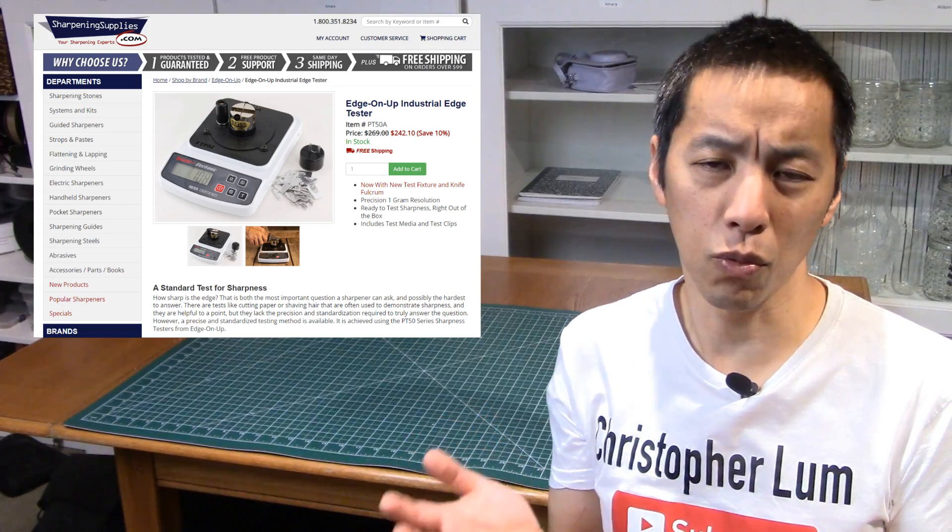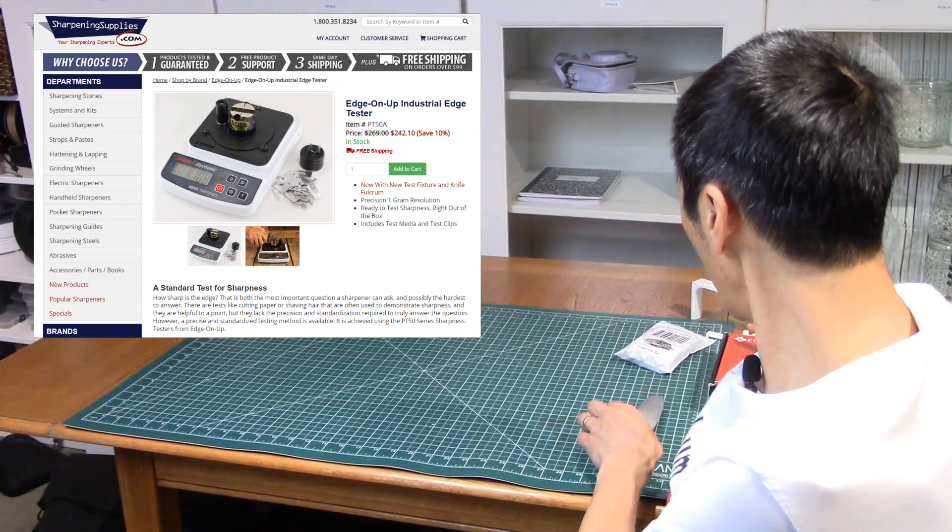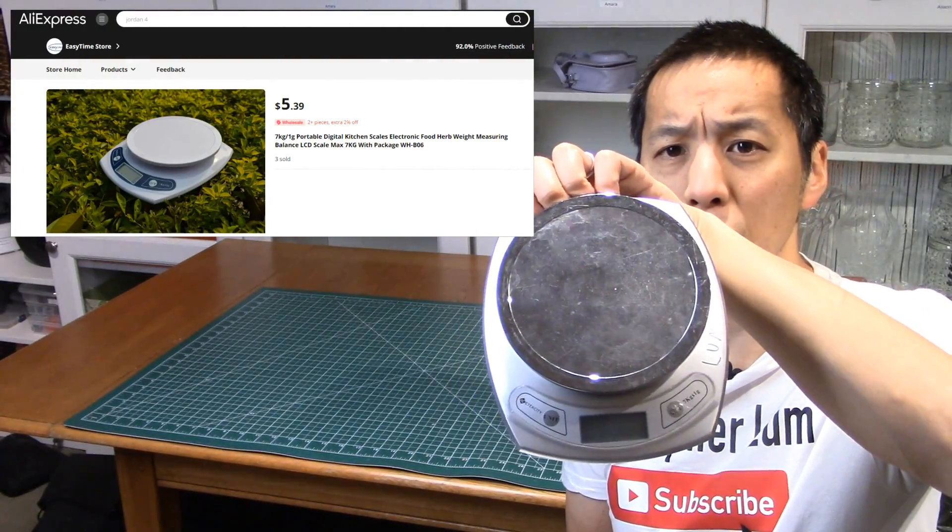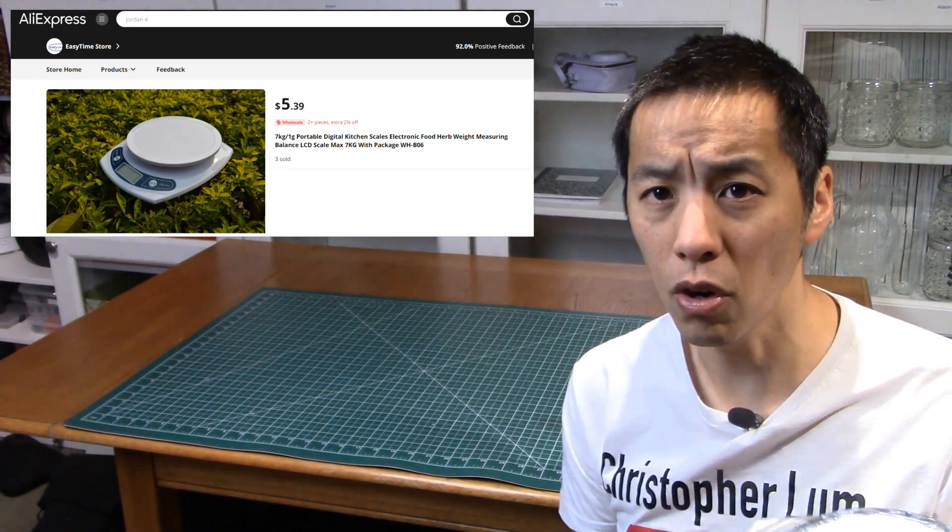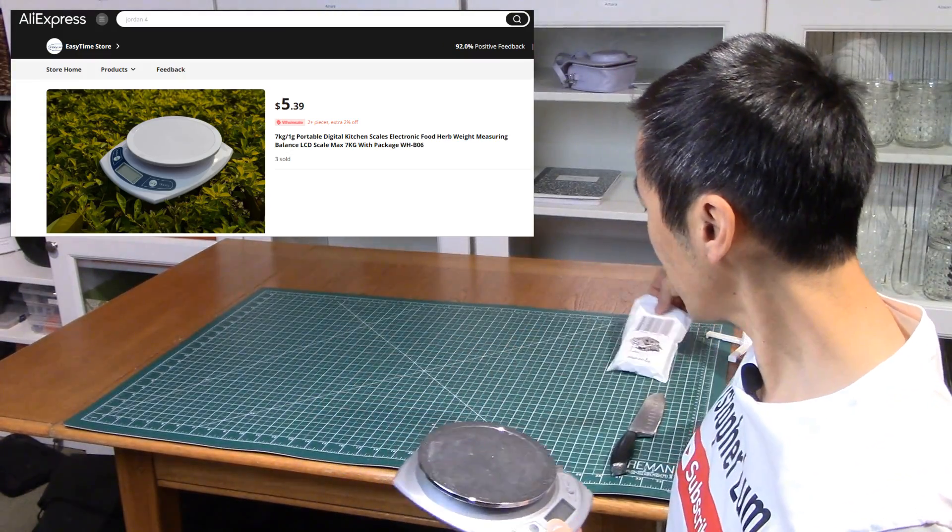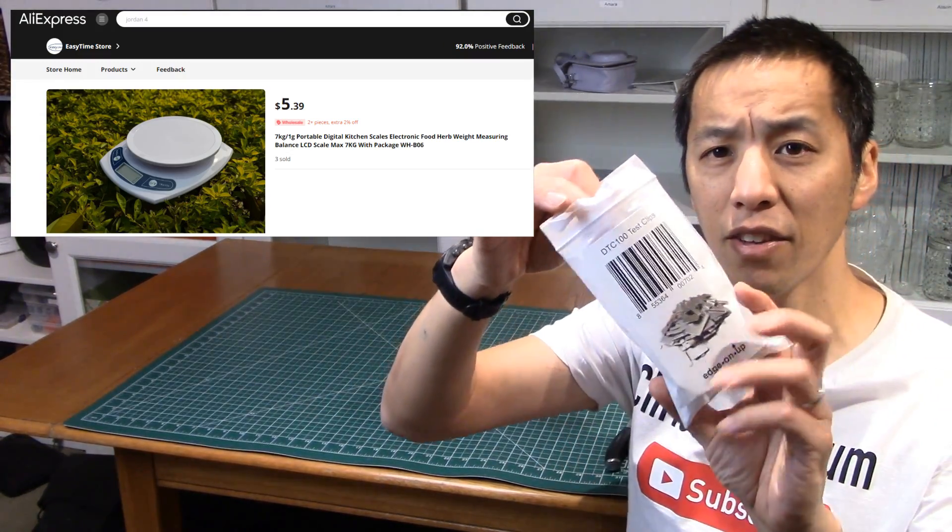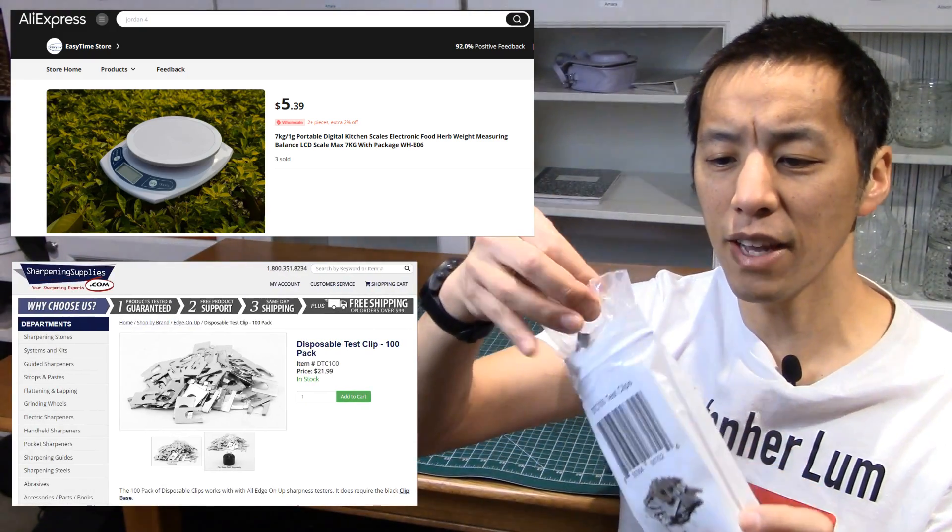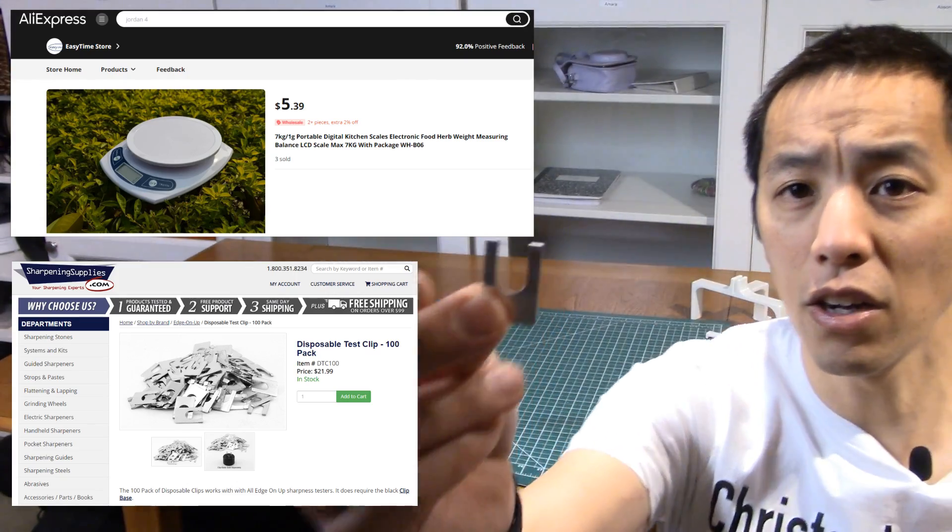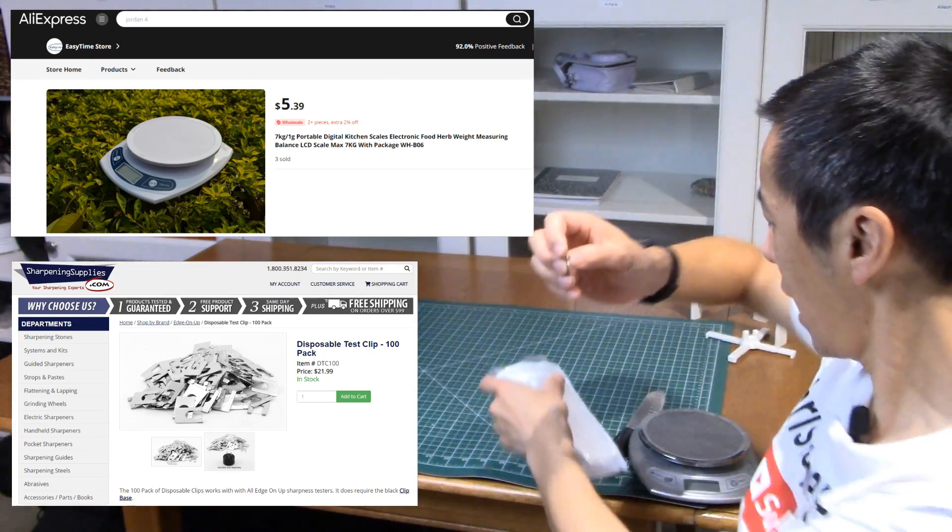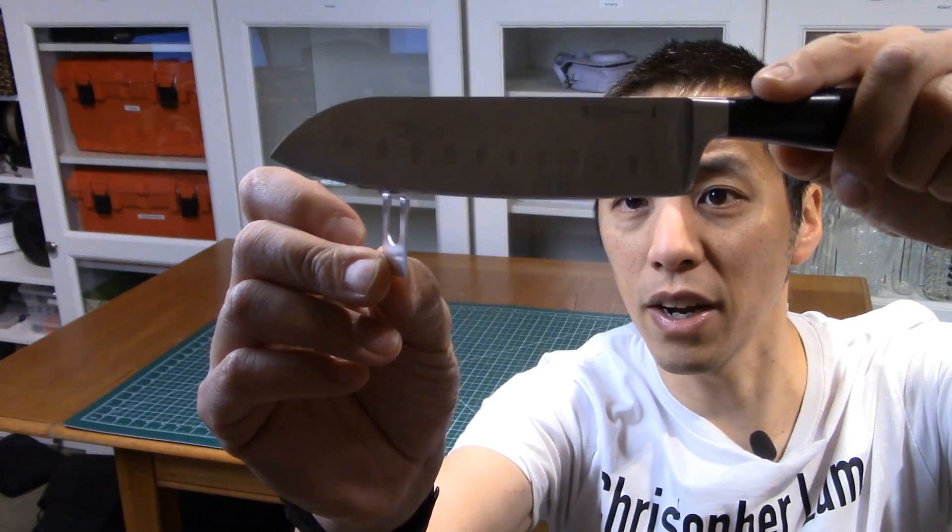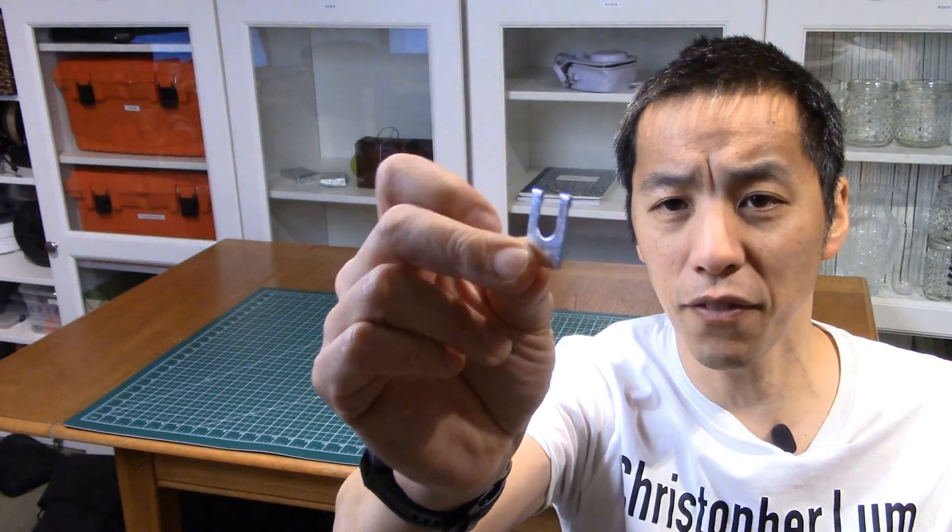So I thought, you know what, that thing is really easy. I bet I can make something like that. So instead of paying $250 to buy that unit, I'm gonna use a little kitchen scale that I had lying around. I'm gonna buy just the test clips. You can buy a pack of these test clips. All this test clip is—I'll show you, it's really simple—it's a little wire here. All that's gonna happen is that this knife needs to go down and try to cut through the wire. We're gonna measure how much force does it take for that to happen.